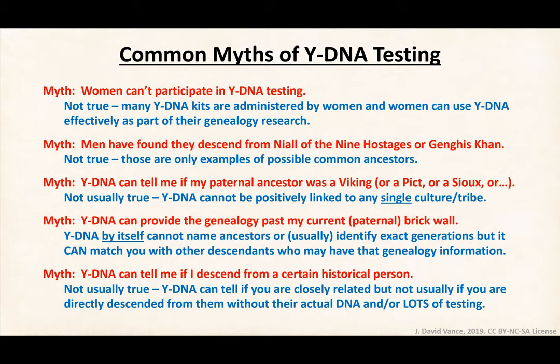Another myth is that Y-DNA can tell you if you descend from a certain historical person — for example, if your family says you descend from Abraham Lincoln, can you prove that? The real answer is usually not. The problem is that brothers, uncles, and cousins can inherit identical Y-DNA. Sometimes a mutation differs between those lines. If you can test descendants of the historical person and triangulate mutations, or dig them up and test them, you may be able to tell. Otherwise, you can't be sure without a lot of testing and research on the various descendant lines.